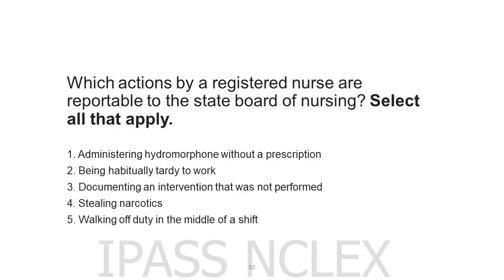Which actions by a registered nurse are reportable to the State Board of Nursing? Select all that apply. 1. Administering hydromorphone without a prescription. 2. Being habitually tardy to work. 3. Documenting an intervention that was not performed. 4. Stealing narcotics. 5. Walking off duty in the middle of a shift.